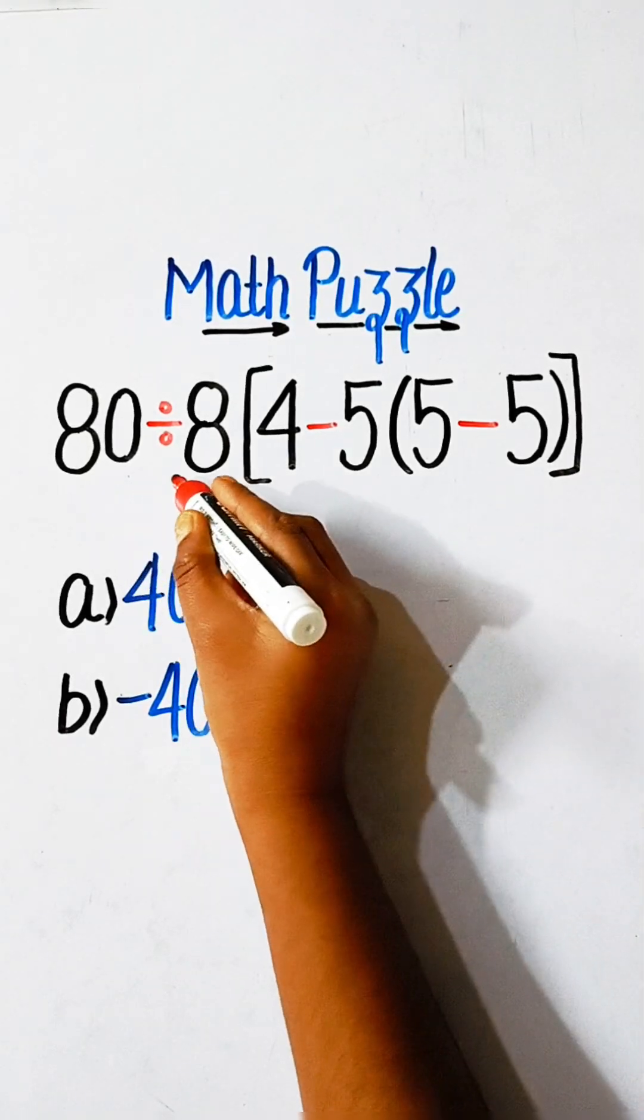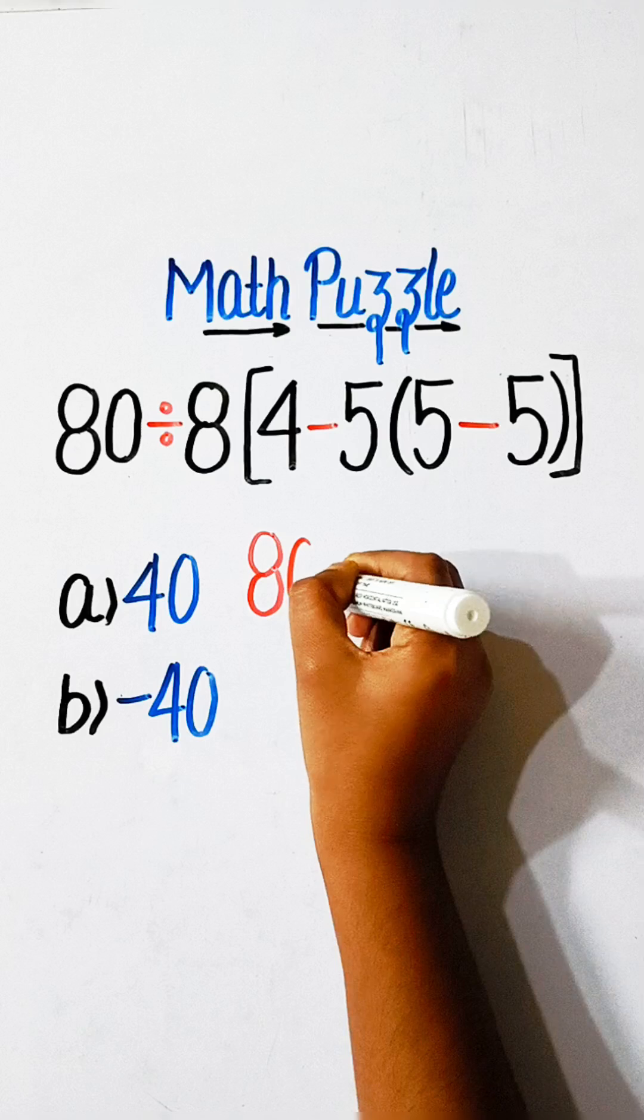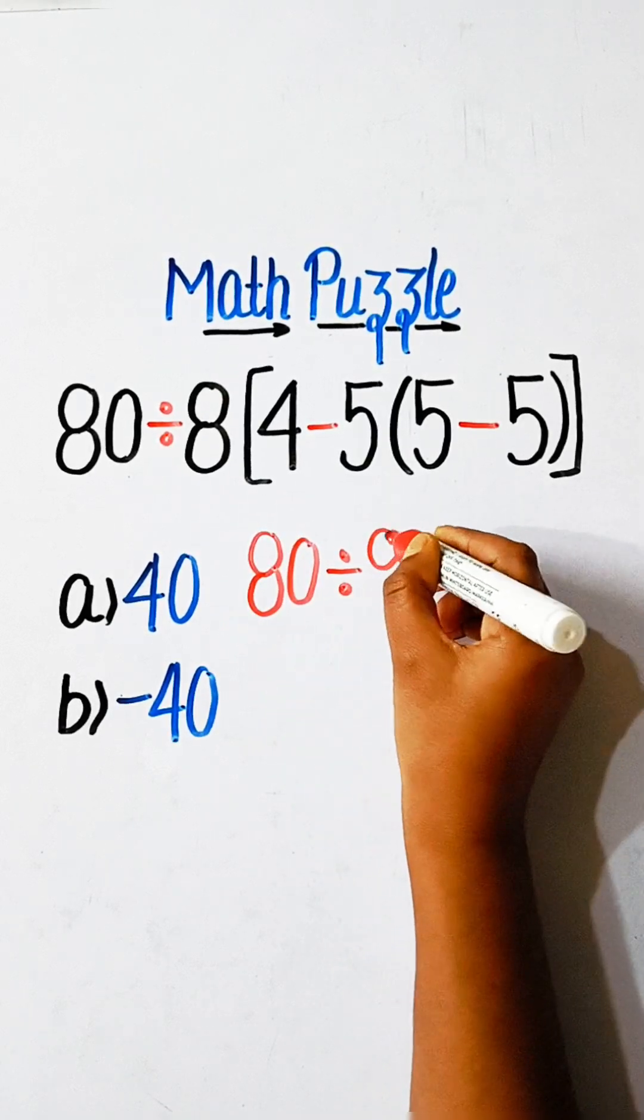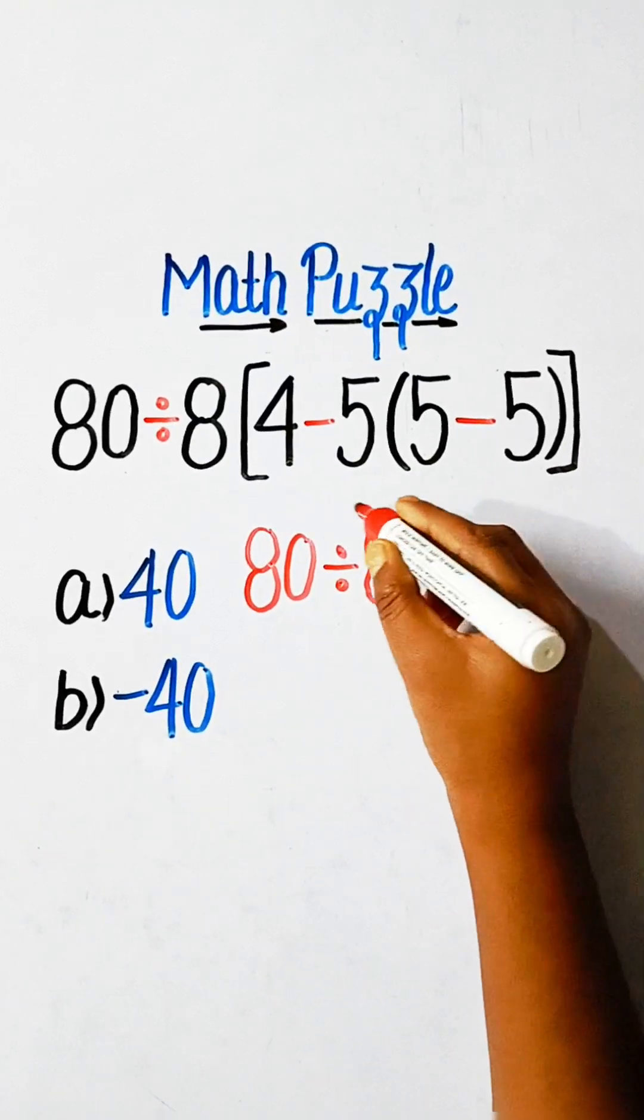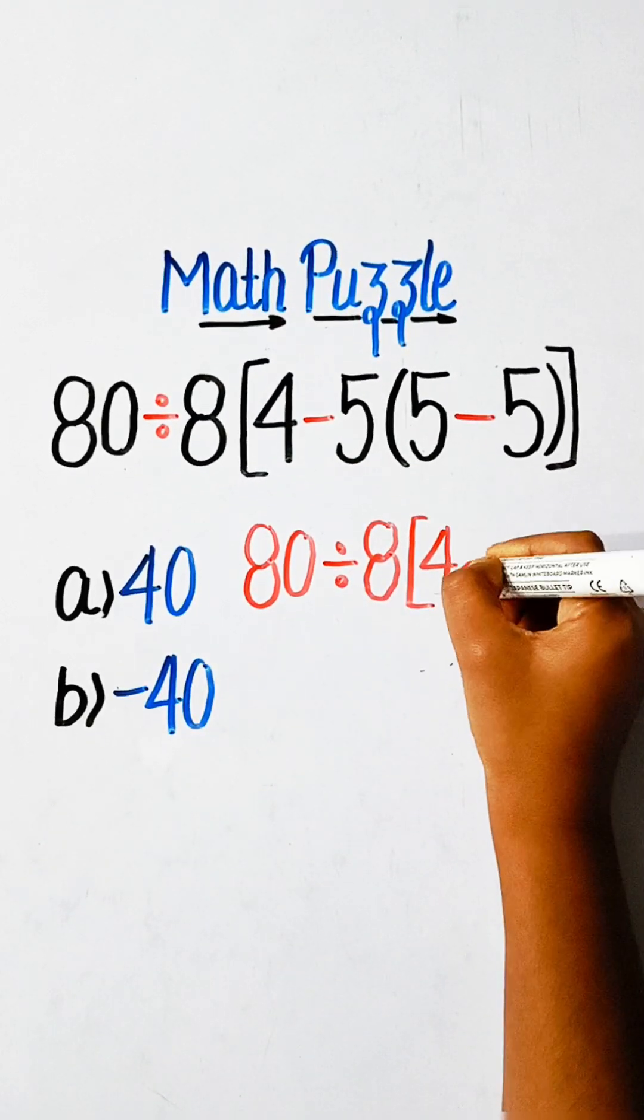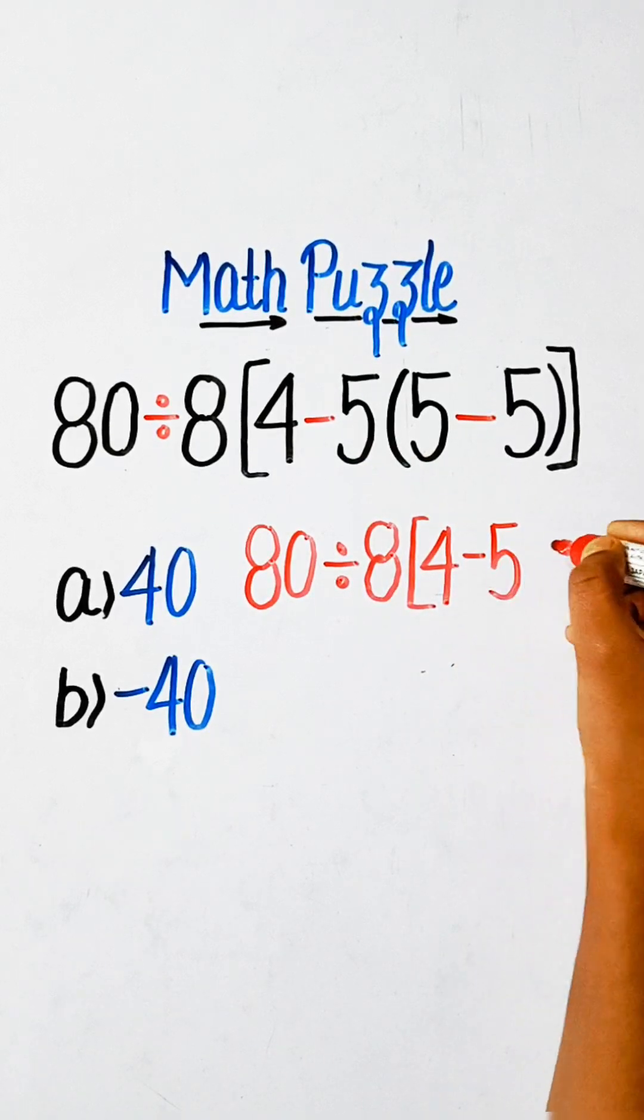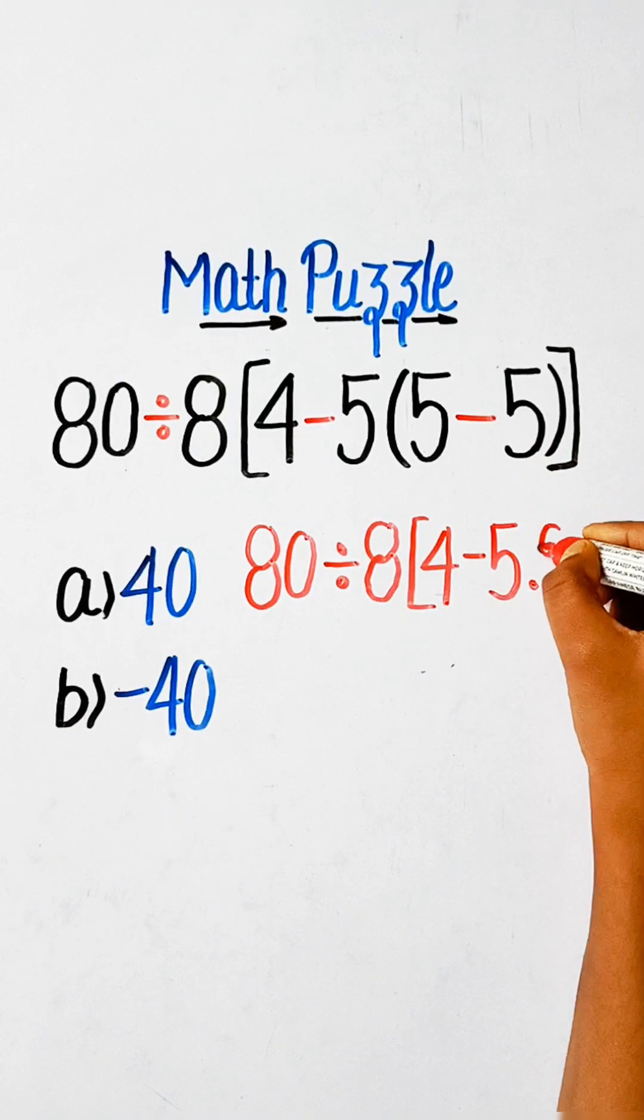So we will write 80 divided by 8 under bracket 4 minus 5 and multiply by 5 minus 5 is equal to 0.